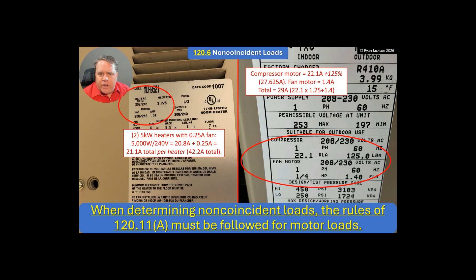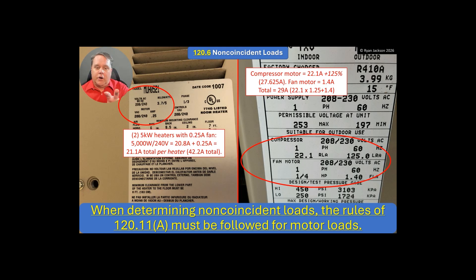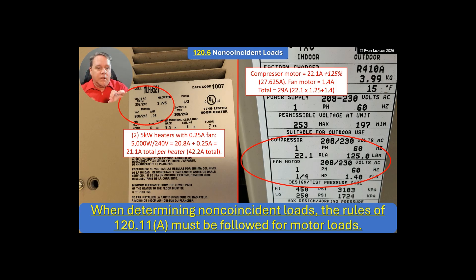When determining non-coincident loads, the rules of 120.11(a) must be followed for motor loads. I'm not going to get too deep into 120.11(a), but what it says is when you're doing your motor load calculations, generally speaking, if you have a motor and other loads or multiple motors, you're going to take the biggest motor at 125% plus all of the other loads on that circuit.